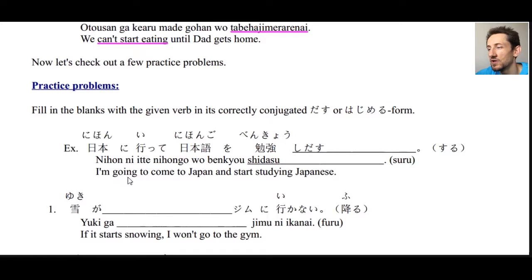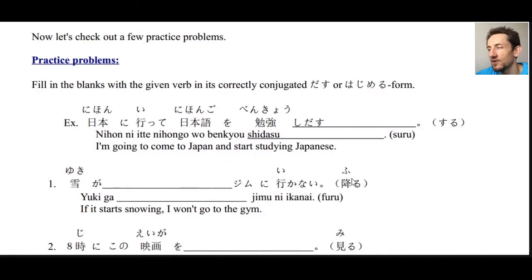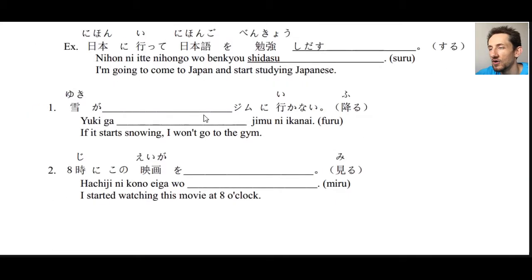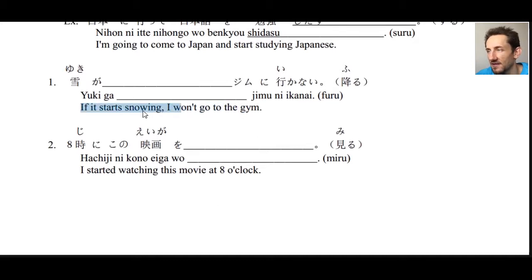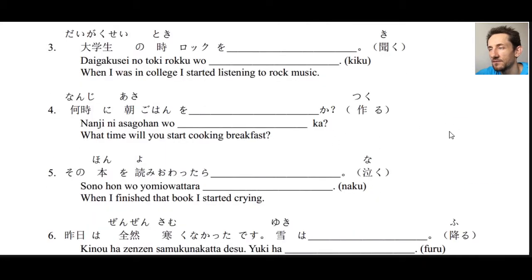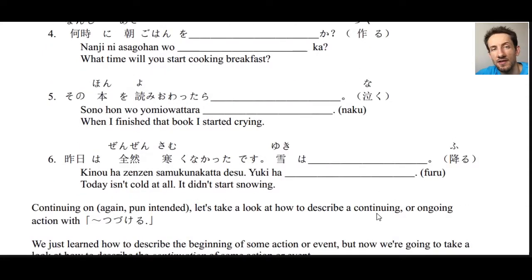Now we'll look at some practice problems — we read the English sentence and conjugate the given verb appropriately. For example: 'I'm going to come to Japan and start studying Japanese' — nihon ni itte nihongo wo benkyou shidasu, or benkyou shi hajimeru. Whichever you prefer, there's no difference. Look at each English sentence carefully — some use conditionals or past tense — and pause the video to answer numbers one through six.